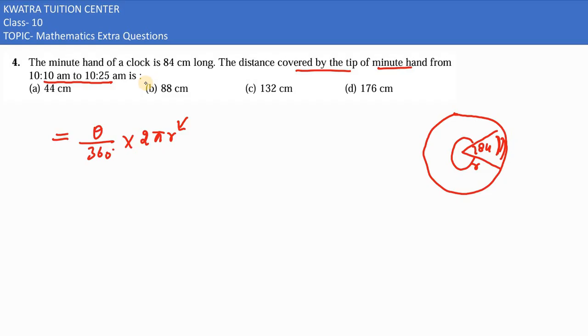That's nothing but for 60 minutes we know it's taking 360 degrees. So one minute ke liye kitna ho jayega? 360 divided by 60, that's nothing but 6 degrees. One minute mein 6 degrees, so 15 minutes mein it would be 15 into 6 degrees which is nothing but 90 degrees.